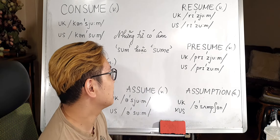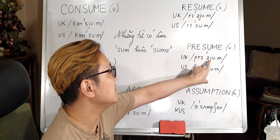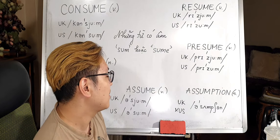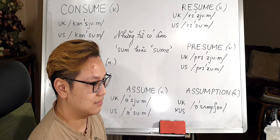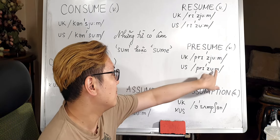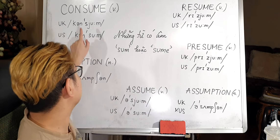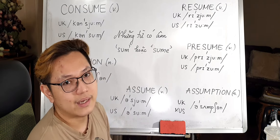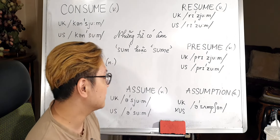Now let's look at 'presume'. UK is 'pre-zeeum' — presume. And the US way: presume. Look at this — it's also a very long vowel. Các bạn thấy cái chỗ này nó đều là chữ U kéo dài — nguyên âm kéo dài.